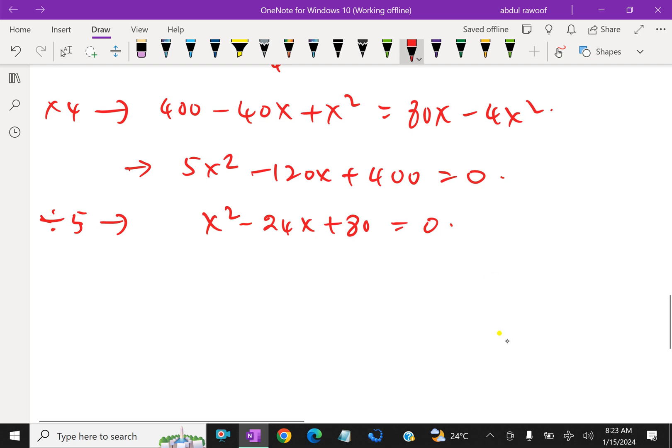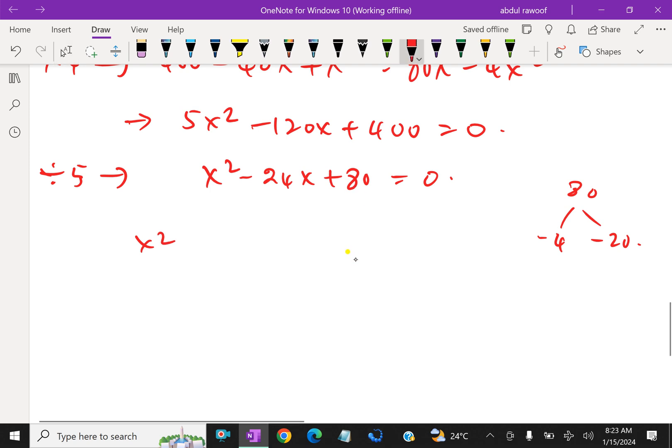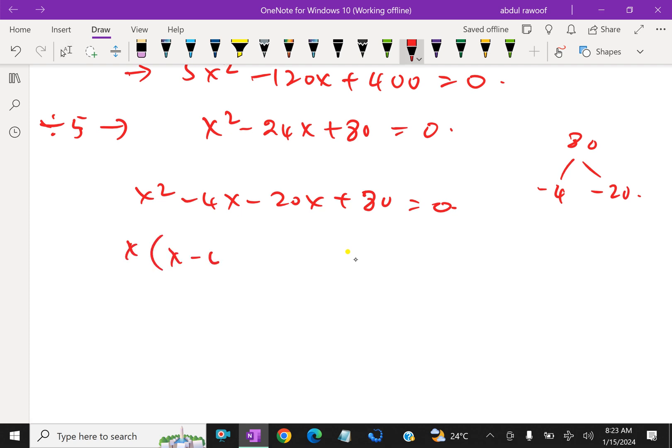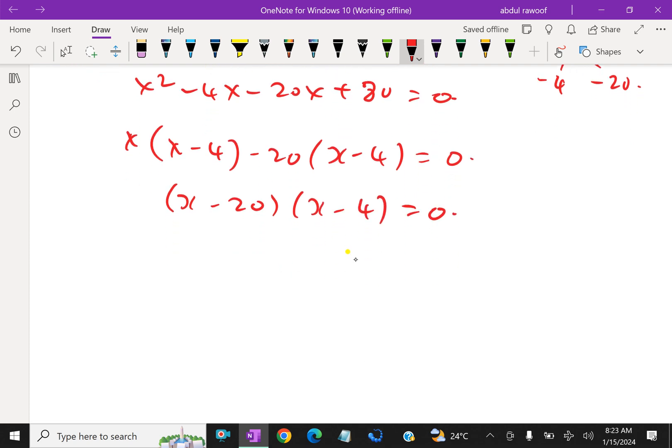By factorizing, look at here, 80 can be split as minus 4 and minus 20. So x squared splitting the middle term, that is minus 4x minus 20x plus 80 equals 0. By collecting common factors, x minus 4 and minus 20, x minus 4 equals 0. By factorizing we have x minus 20 and x minus 4 equals 0.